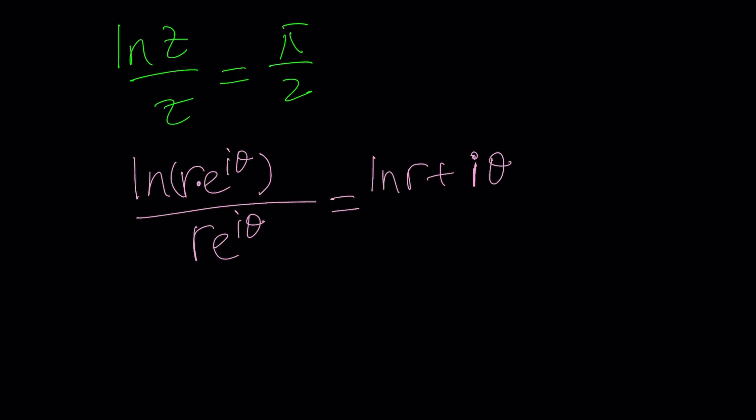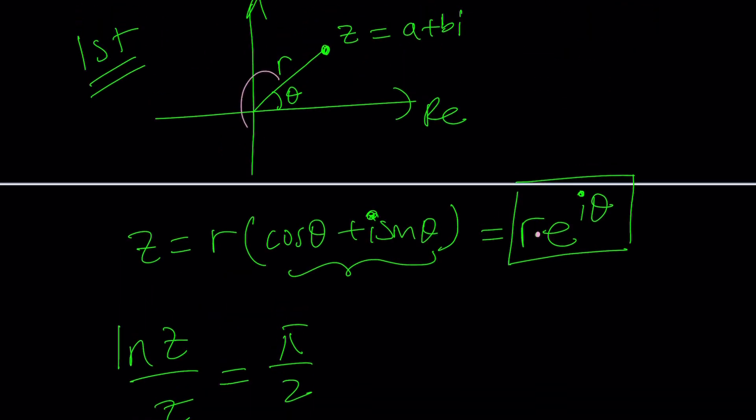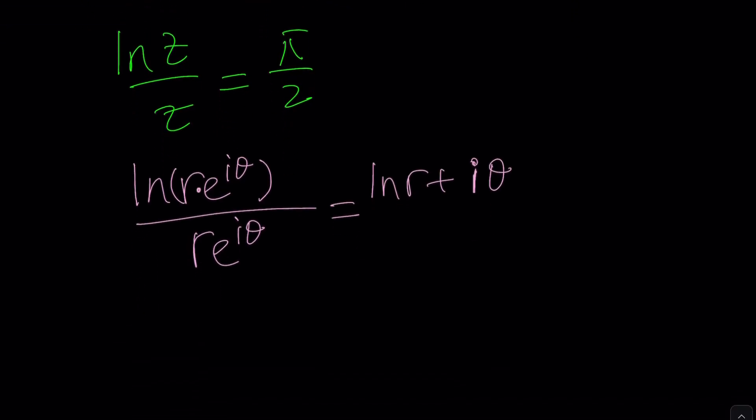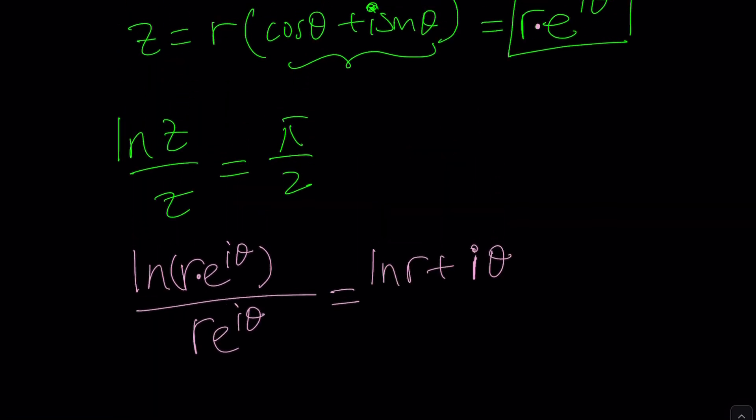But one thing to keep in mind is θ is not the only angle that satisfies this. For example, if I added 2π to θ, it will bring me to the exact same point, therefore the same location and the same point. Same number. So, in other words, instead of writing this as iθ, I could also write it as R times e to the power i times (θ plus 2πn).